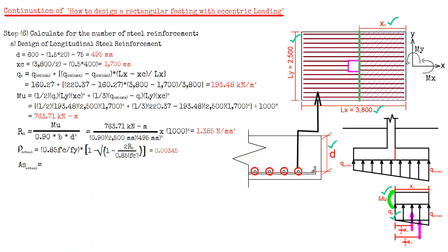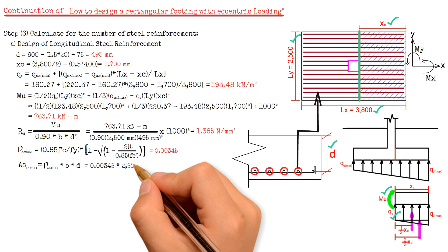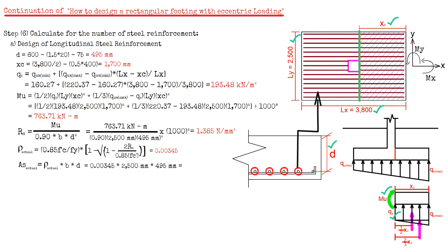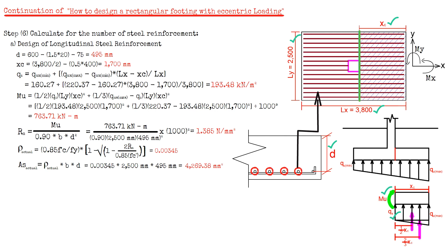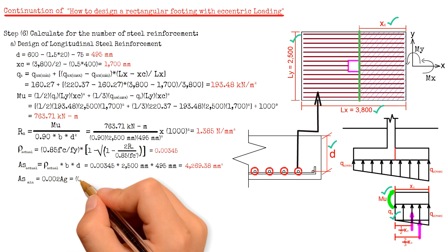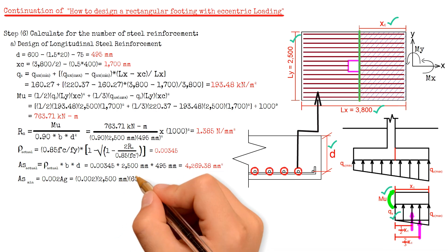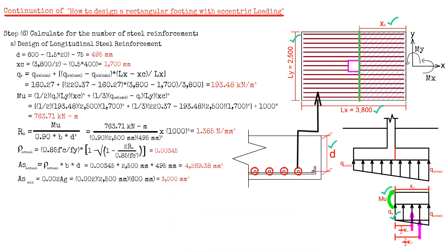To solve for the area of steel, we multiply the actual steel ratio 0.00345 by the width b 2500 mm times the effective depth d 495 mm, giving 4,269.38 mm². We also calculate the minimum area of steel at 0.2% of the gross area: 0.002 times 2500 mm times 600 mm equals 3,000 mm². We choose the larger of the two, which is 4,269.38 mm².